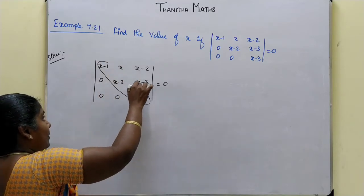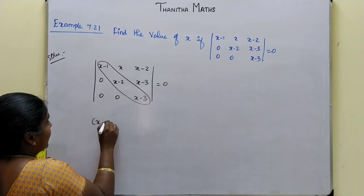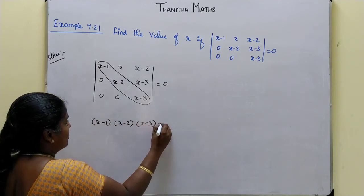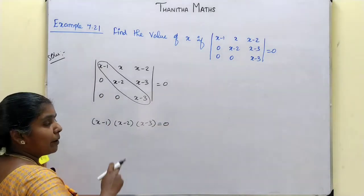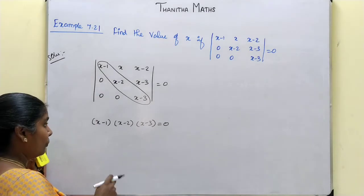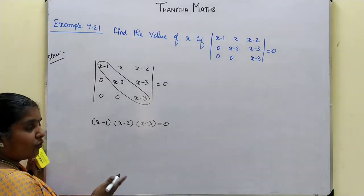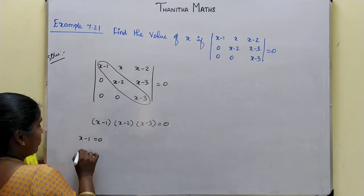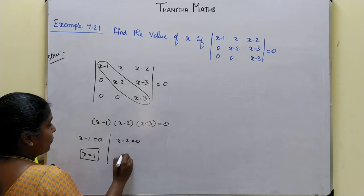The diagonal elements of this triangular matrix are x-1, x-2, and x-3. Setting x-2 equal to 0, we get x is equal to 2.